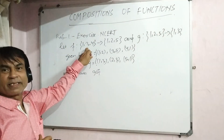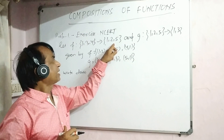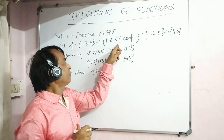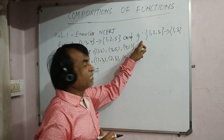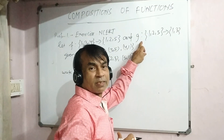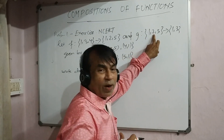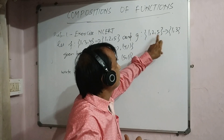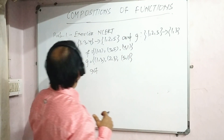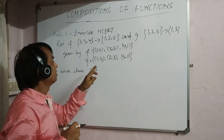Note that fog is not always equal to gof — composition of functions is not always commutative. Now coming to the NCRT problem: f is a function from the set containing elements 1, 3, 4 to the set containing elements 1, 2, 5, and g is a function from the set {1, 2, 5} to the set {1, 3}.